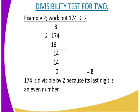We can have another example for divisibility test for 2, where you divide 174 by 2. You are going to get 87. So 174 is divisible by 2 because the last digit is an even number.